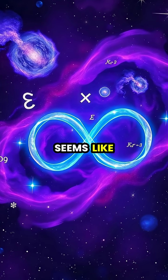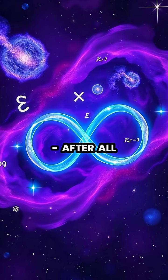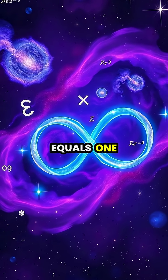Dividing infinity by infinity seems like it should be simple. After all, anything divided by itself equals one, right?